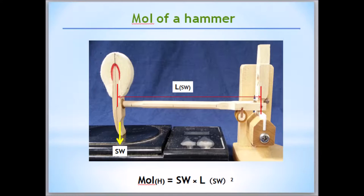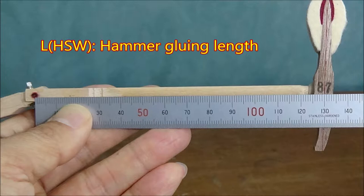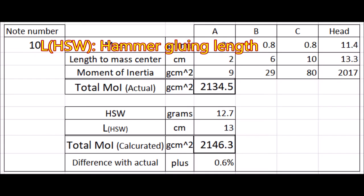Of course, we can cut shanks to get moment of inertia of the actual piano, but we use an alternative way. Moment of inertia of the hammer equals strike weight multiplied by the squared length to strike weight. Strike weight can be measured by the Steinway method. Length to strike weight is glued length. Measure like this from center pin to center of hammer wood.